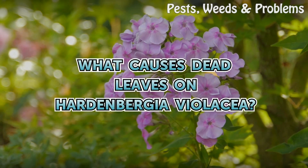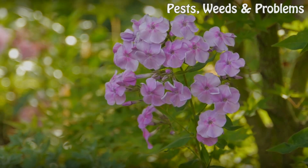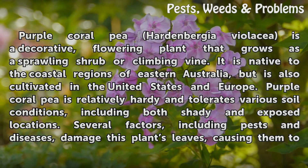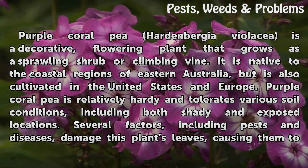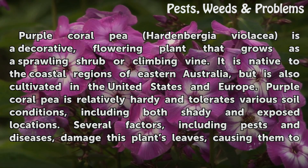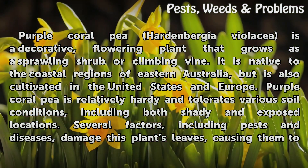What causes dead leaves on Hardenbergia violacea? Purple coral pea, Hardenbergia violacea, is a decorative flowering plant that grows as a sprawling shrub or climbing vine. It is native to the coastal regions of eastern Australia, but is also cultivated in the United States and Europe. Purple coral pea is relatively hardy and tolerates various soil conditions, including both shady and exposed locations.